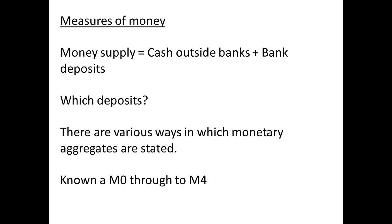There are various measures of money. The most important point to note is that the money supply is equal to the cash in circulation plus bank deposits. The question then arises: which deposits do we consider? This is how we end up with different measures of money, known as M0 through M4.